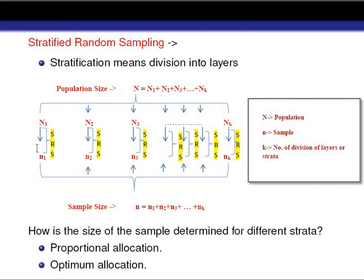We collect the sample from all these strata by using the technique of simple random sampling, so that each and every unit within each stratum has an equal probability of being selected in our sample. The main theme of stratification is that we divide the whole population into different strata and from each stratum we collect our sample using simple random sampling.